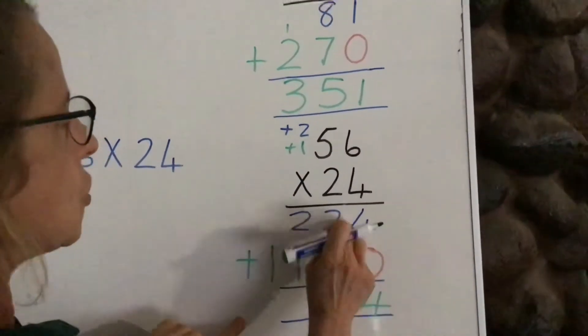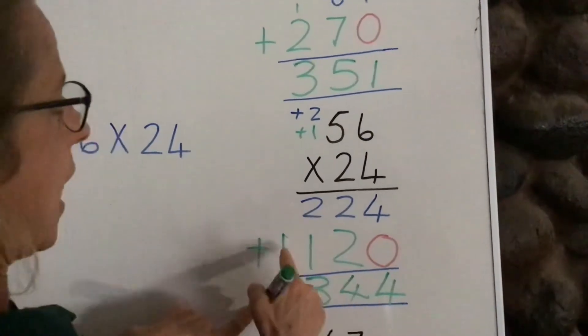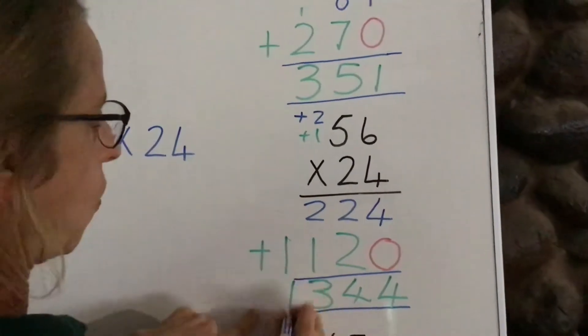Now, all that remains is for us to add up these two rows like this. Four plus zero is four. Two plus two is four. Two plus one is three. And one plus nothing is one. There we are.